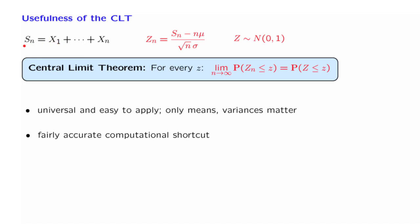In order to calculate the distribution of Sn, we would have to take the distribution of the X's and convolve it with itself n times, something that can be computationally tedious. Whereas the computations that are involved when we use the central limit theorem are very, very simple, as the examples that will be coming up will show to us.